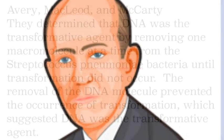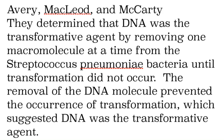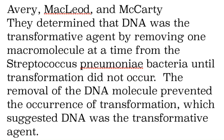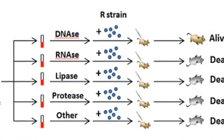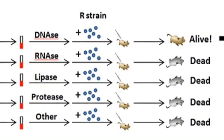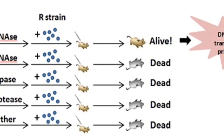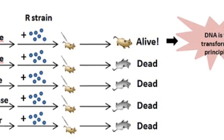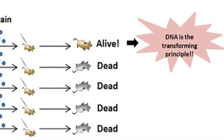Here's Oswald Avery — he and his partners McLeod and McCarty determined that DNA was the transformative agent by taking one macromolecule at a time out from the bacteria until transformation did not occur. Removal of DNA prevented transformation, so that told them it must be the actual agent. When it wasn't there, transformation didn't happen; when it was there, it did. They used enzymes — and some chemical operations — to figure all this out.